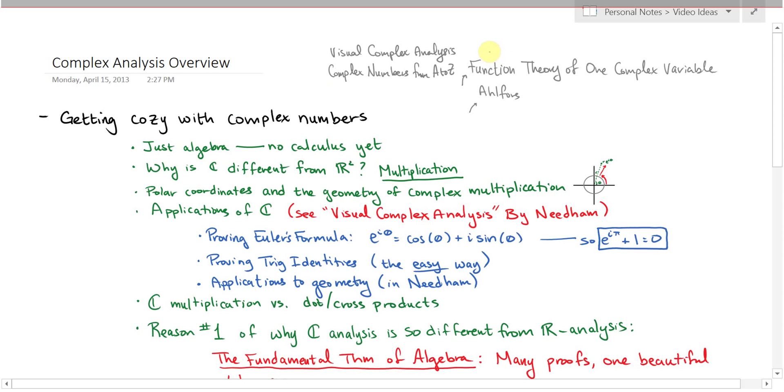And then some of my personal favorite books on complex analysis, Function Theory of One Complex Variable by Green and Krantz, and Ahlfors' book is always a classic. There's also things like Lange's book and so on.